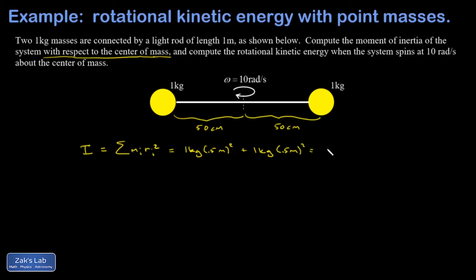And this gives me a grand total of 0.5 kilogram meters squared. Then I can plug into the kinetic energy formula. K is one half times I omega squared, and I get one half times 0.5 kilogram meters squared times omega squared. That was just given as 10 radians per second.